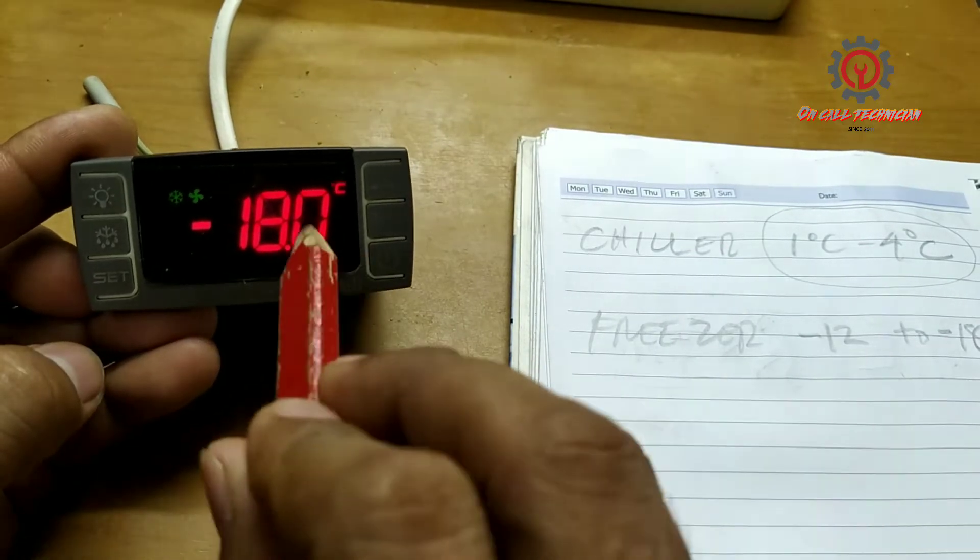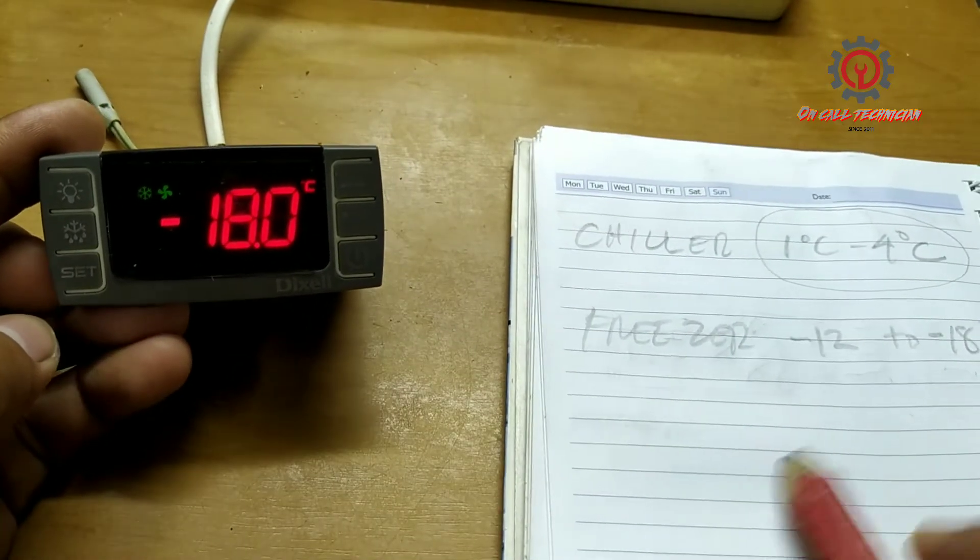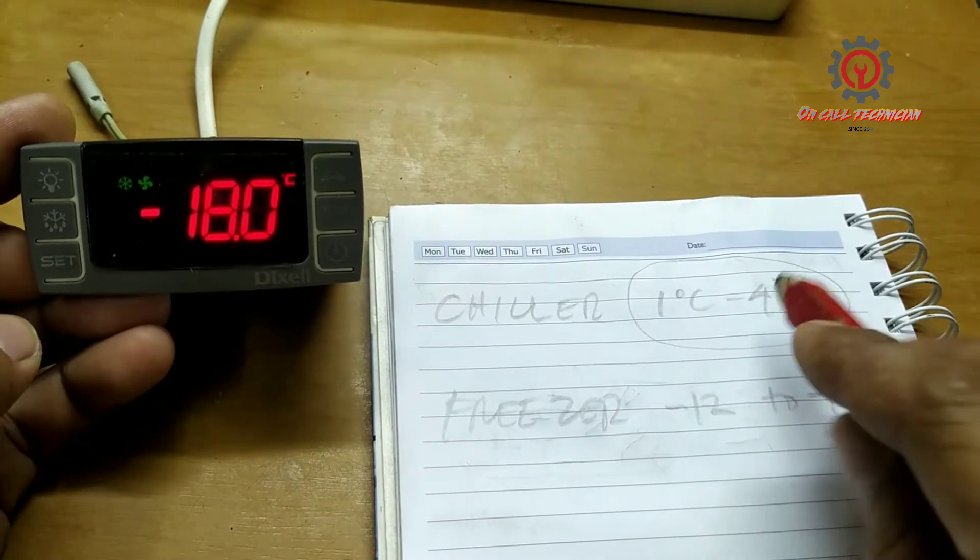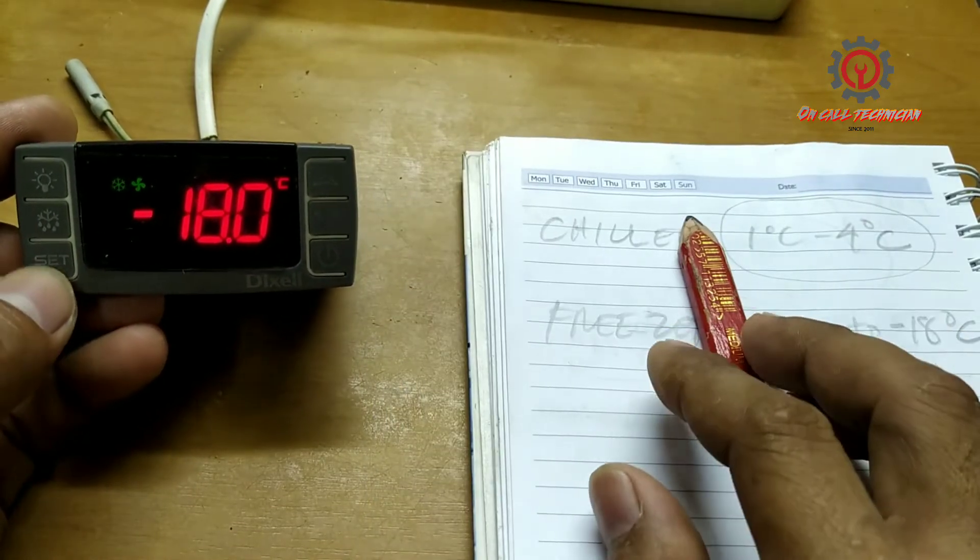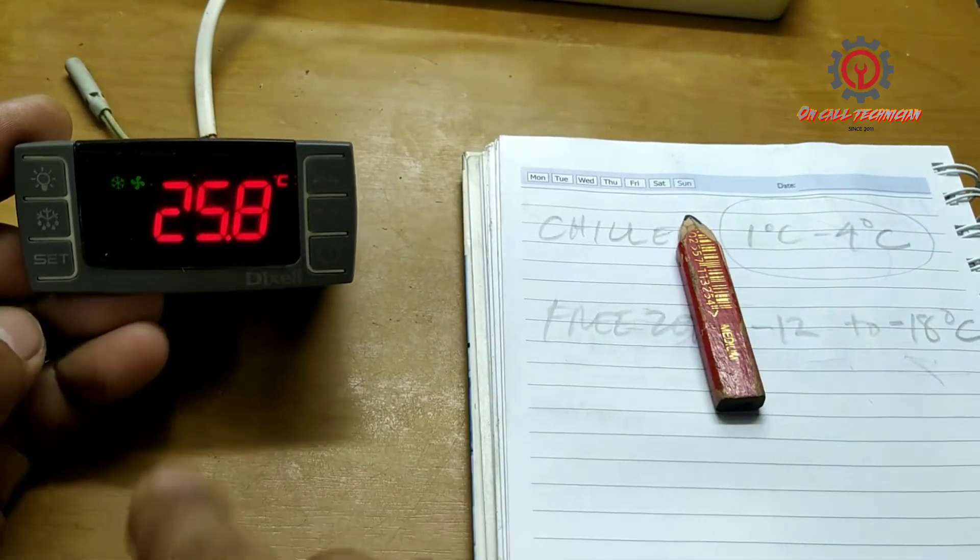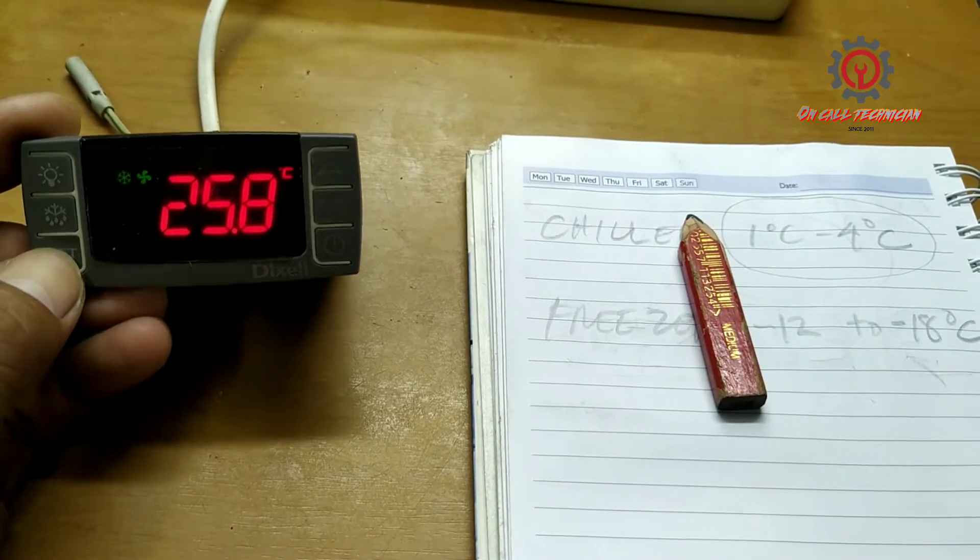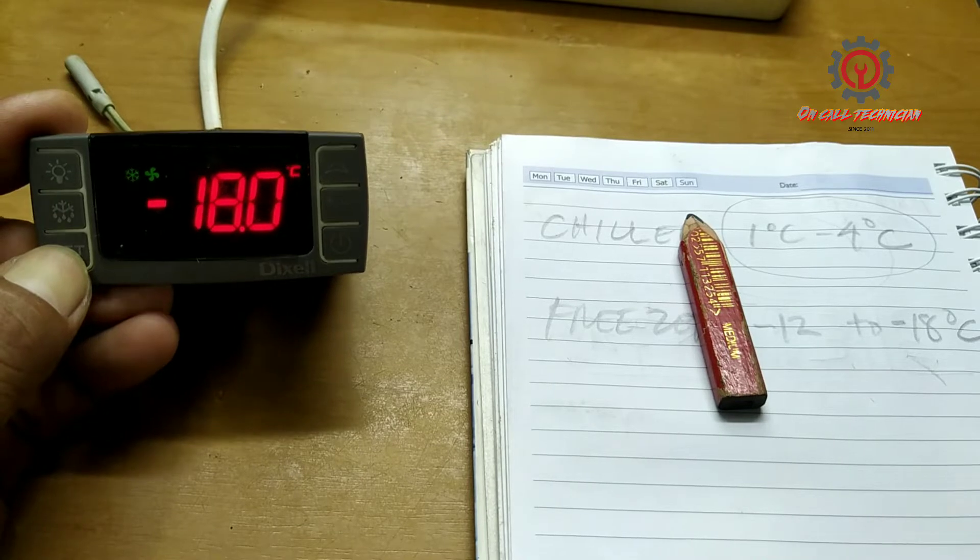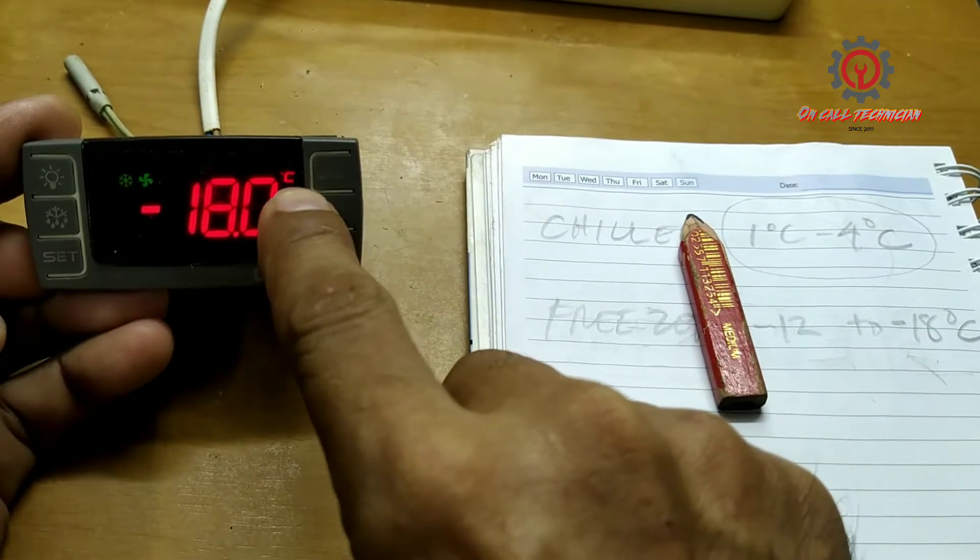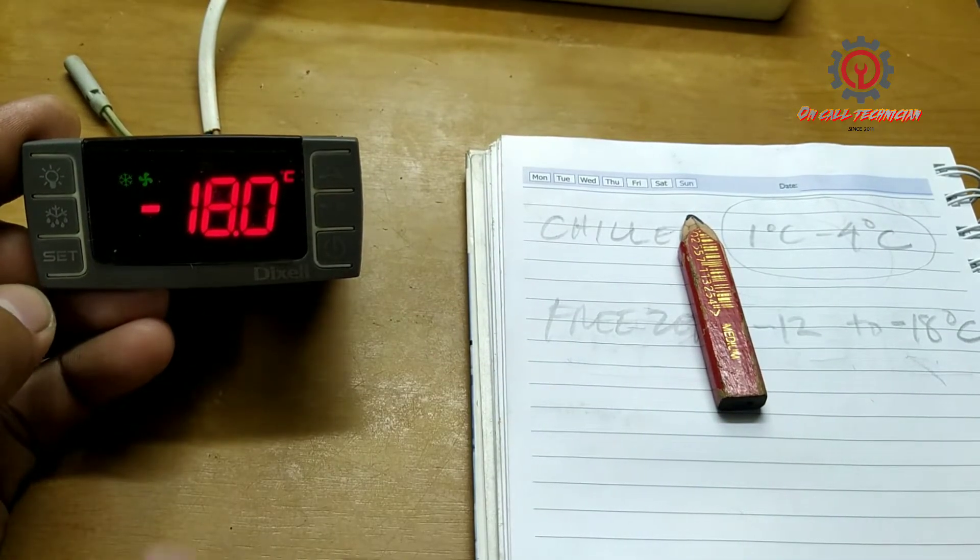It's negative 18. Now I'm going to change that to chiller setting and I'm going to exit that one. I'm going to press the set button for three seconds.